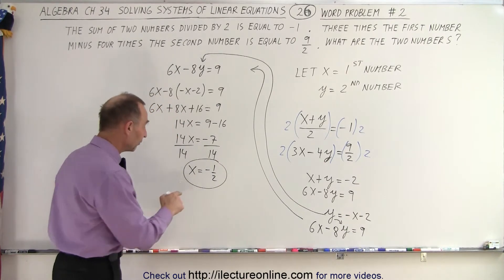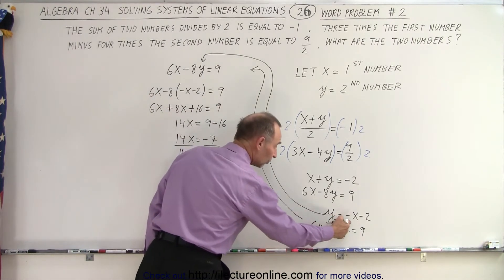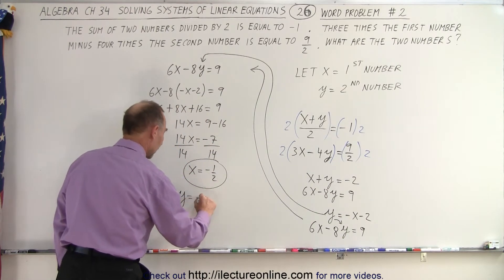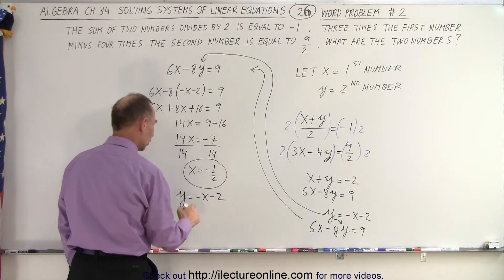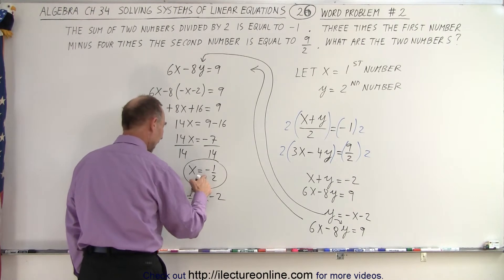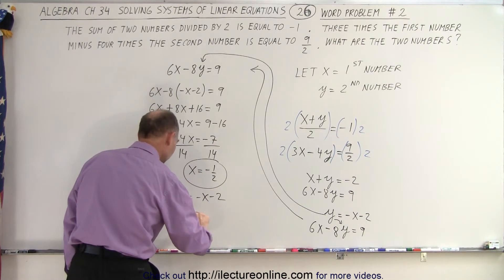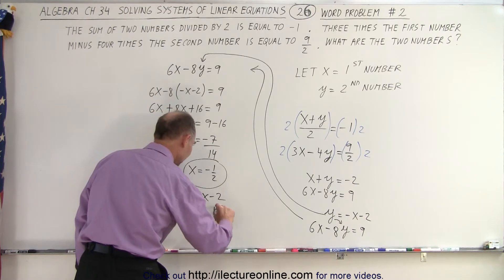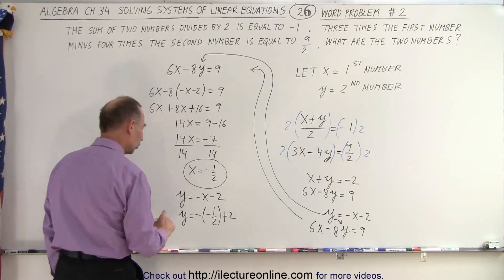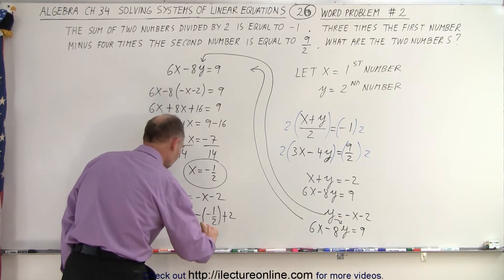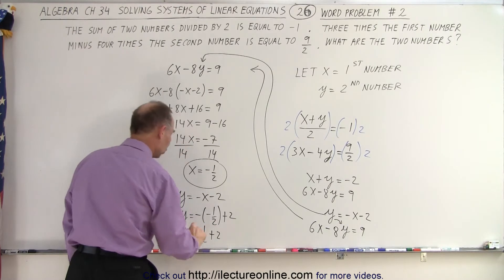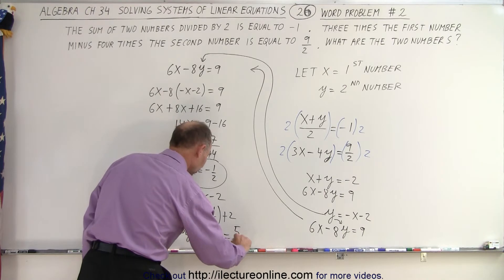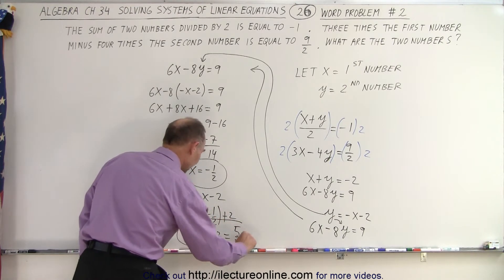Once we have the value for x, we use the substitution equation to find the value for y. So y is equal to negative x minus 2. We plug in negative one half for x, giving us y equals negative times negative one half plus 2. That would be y equals one half plus 2, which is 5 halves. So y equals 5 over 2.